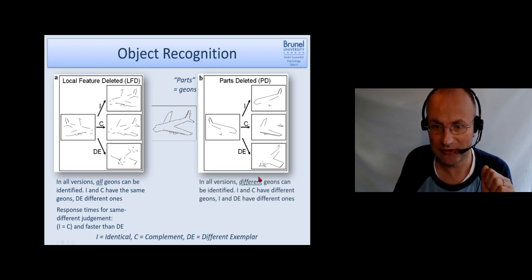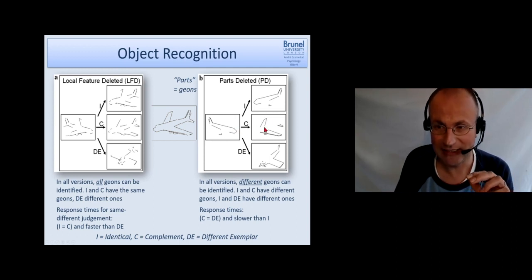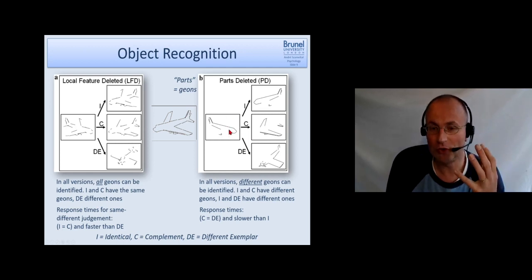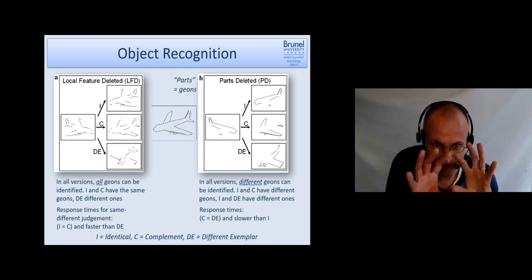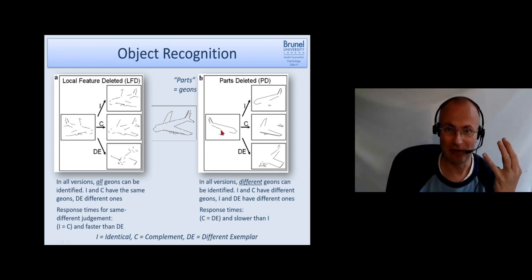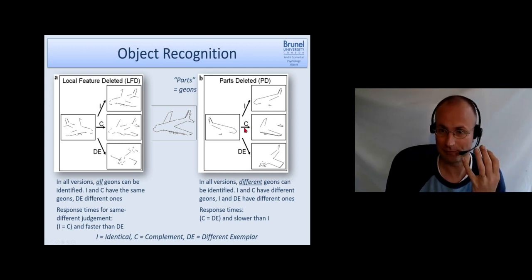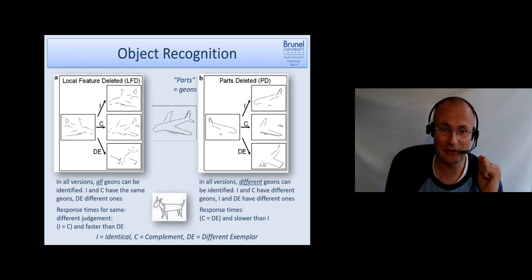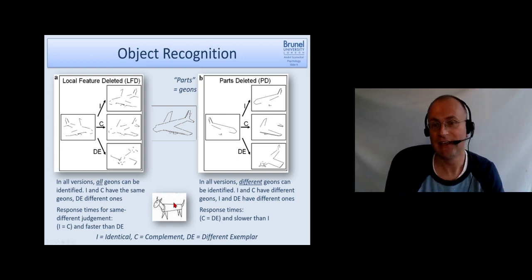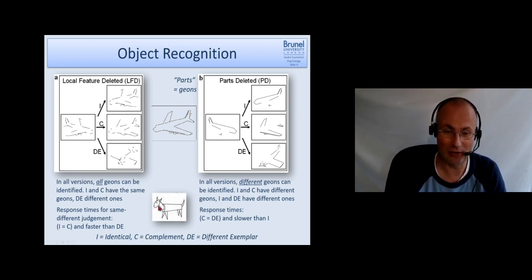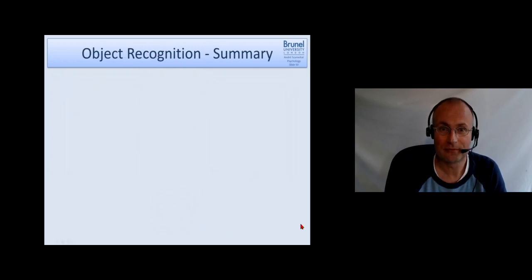Now what happens now in the response times is that the response times for these two are the same, and they are slower than this one. So the identity of the plane is not the relevant thing here, it's the geons which is relevant. So we actually seem to use breakdown scenes and objects into these geons. And if the prime contains the geons we need for the task, it's helpful. But if it doesn't like here, it's not helpful. So this is a very strong support for his theory. And of course you can do that with many other stimuli, not only planes as well. So even animals would be represented in that way according to Biedermann with this schematic illustration of a cow.